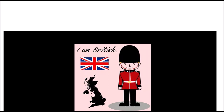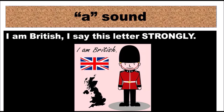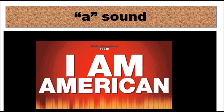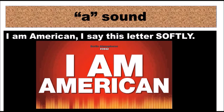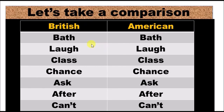Now I'm moving to the third sound: the A sound. If I am British, I say this letter strongly. If I am American, I say this letter softly. Let's compare how we pronounce the A sound in the British versus American accent: path, bath, laugh, class, chance, ask, after, can't — the British version is strong, the American version is soft.